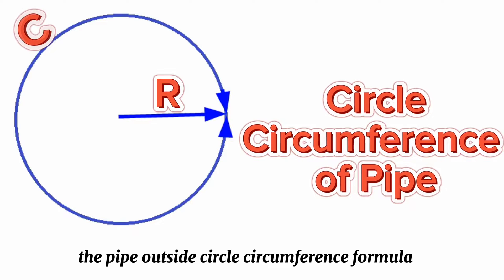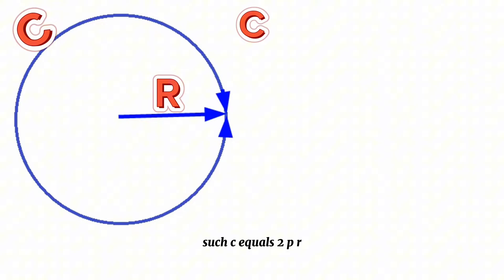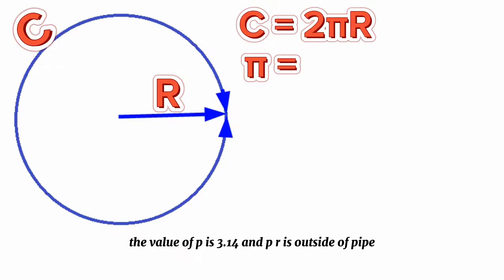The pipe outside circle circumference formula is C equals 2πR. Here, C is circumference. The value of π is 3.14. R is the outside radius of pipe.